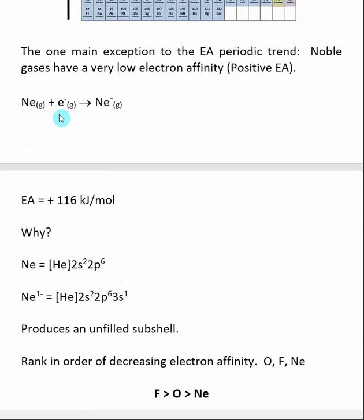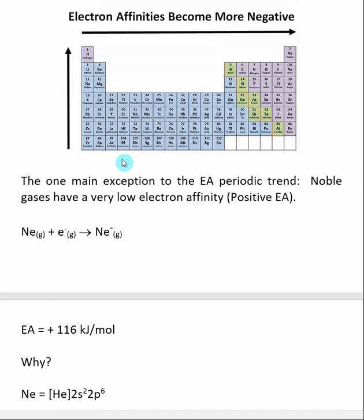When we come along and try to make a noble gas gain an electron, like we're showing here for neon minus, we are upsetting the full subshell, and so that's not energetically favorable, and that's why noble gases tend to have very low electron affinities. This is one important exception to the trend for electron affinities. Electron affinities tend to become more negative as we go up and to the right, but noble gases have relatively large positive electron affinity, which means that their electron affinity is low.